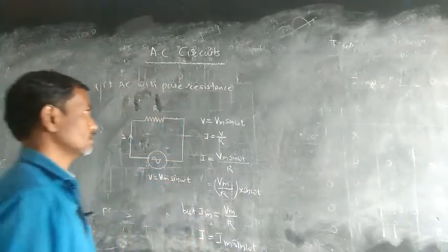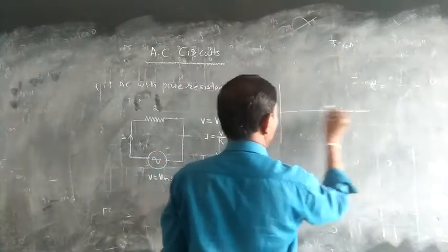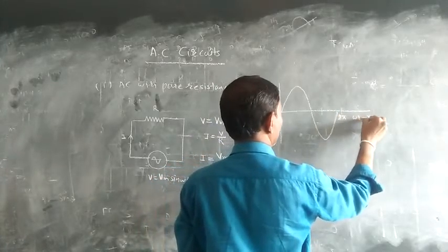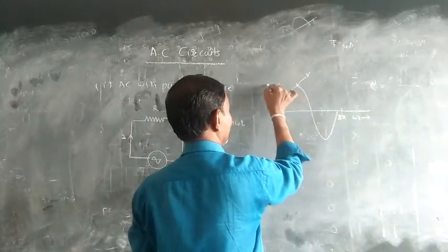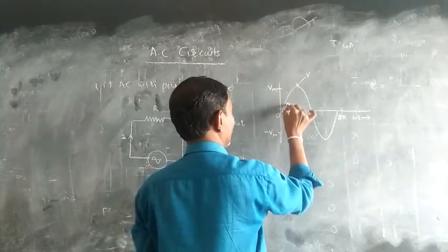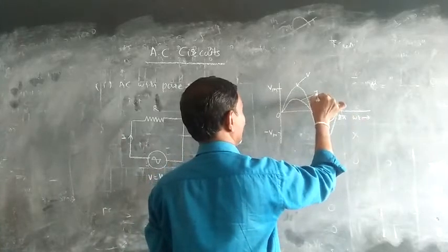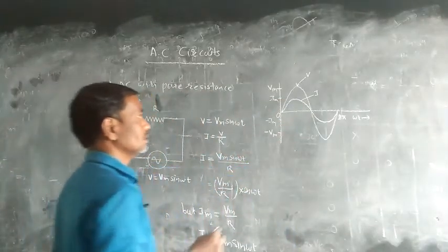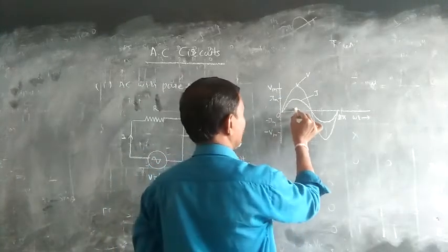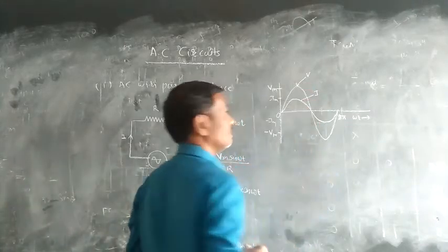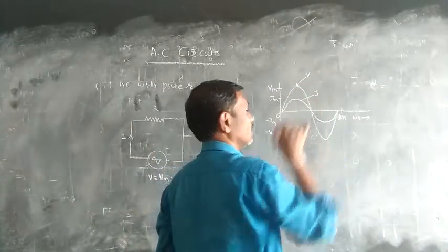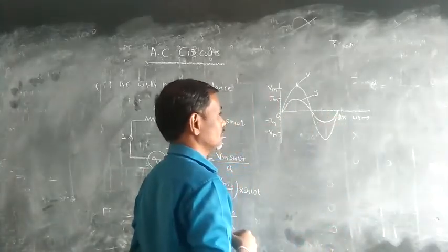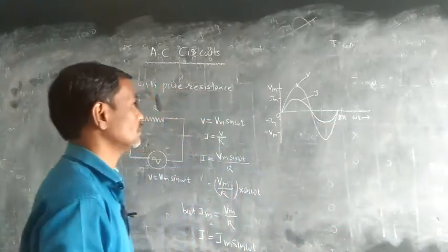Looking at the waveform: the voltage Vm goes from 0 to 2π. When the voltage is zero, the current is zero. When the voltage is at maximum value, the current is at maximum value. When the voltage is maximum negative, the current is maximum negative. The change in voltage corresponds to a change in current.